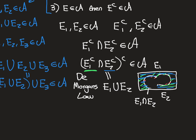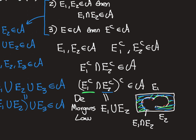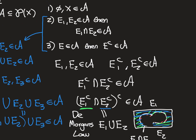That's how you argue that e1 union e2 is in the algebra. We started with two arbitrary elements of the algebra. Because they're elements, e1 complement and e2 complement must be in the algebra. Because the algebra is closed under intersection, e1 complement intersect e2 complement is in the algebra. Because it's closed under complement, the complement of that is in the algebra. But by De Morgan's law that equals e1 union e2, and therefore e1 union e2 is in the algebra.